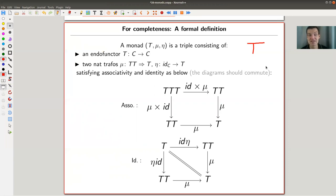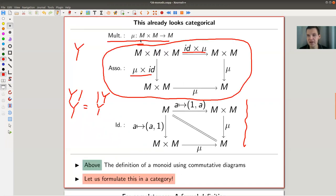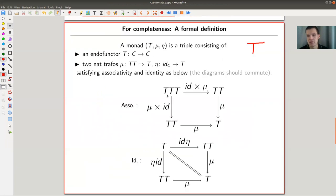And the multiplication is just a natural transformation from, well, what was it before? It was M cross M to M. So now it's T times T. So application of functors to T. And identity, there should be a double arrow here. The identity is just an operation from the identity functor to T.